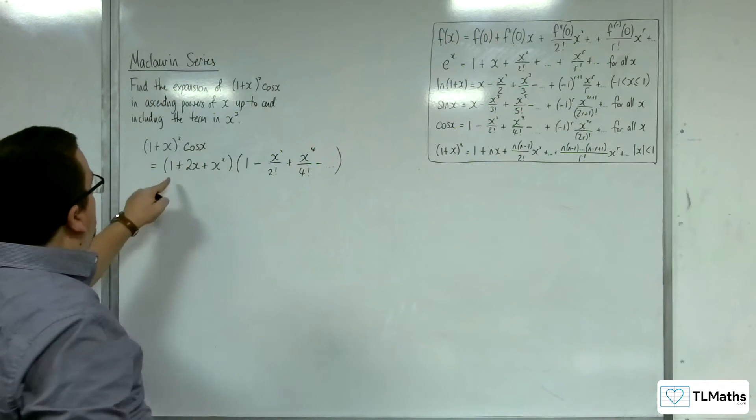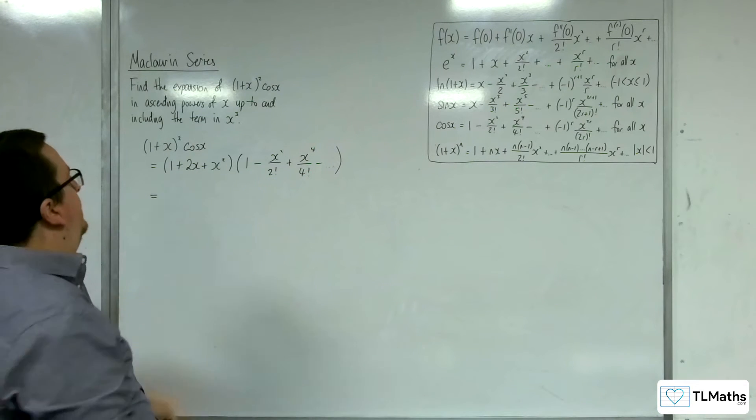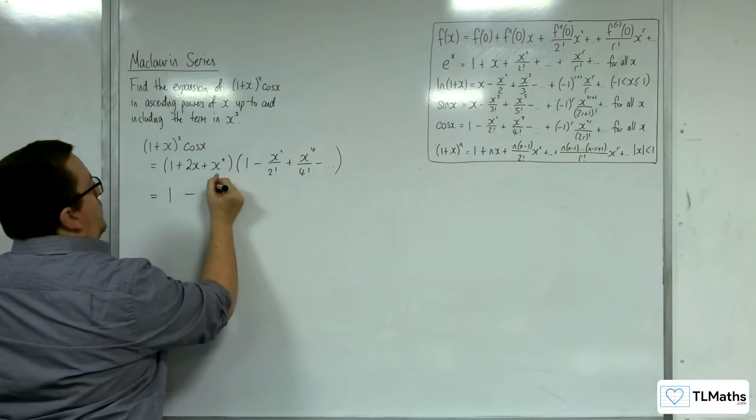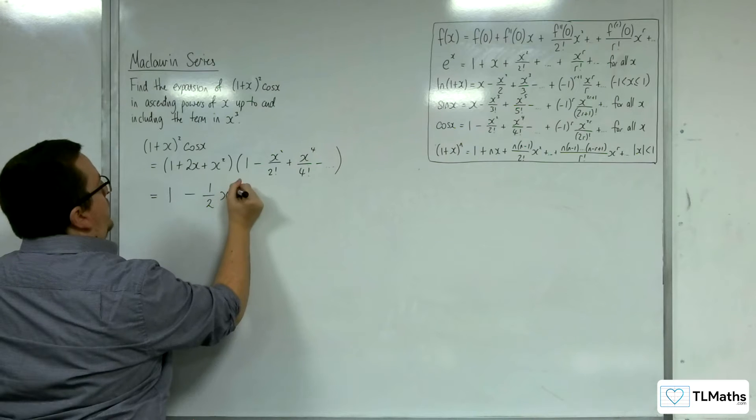So what I'm going to do is I'm just going to multiply 1 by each of these terms. So 1 times 1, 1 times minus x squared over 2 factorial, so minus one half x squared.